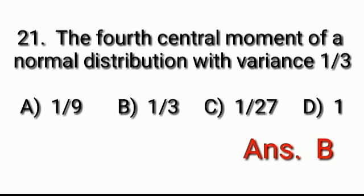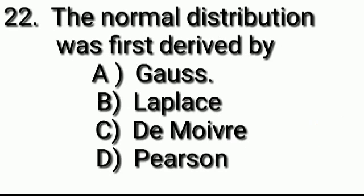Question number 22: The normal distribution was first derived by whom? Options: Gauss, Laplace, De Moivre, Poisson. Answer: Option C (De Moivre).